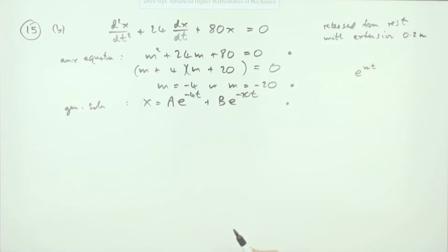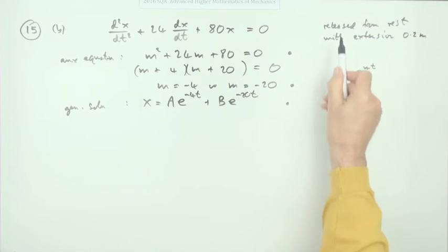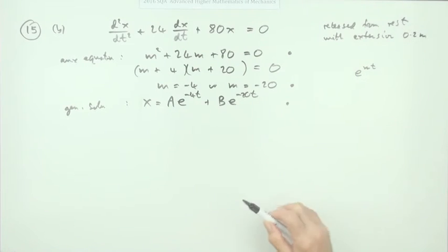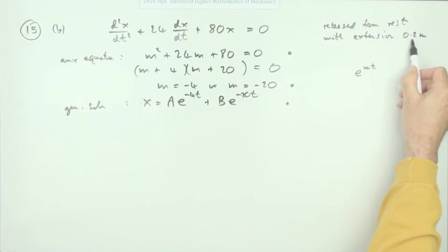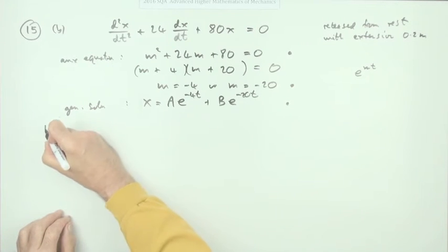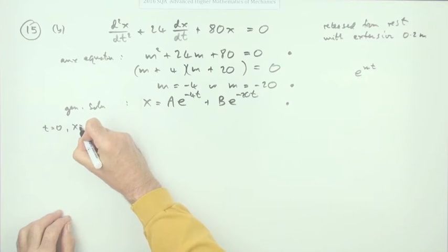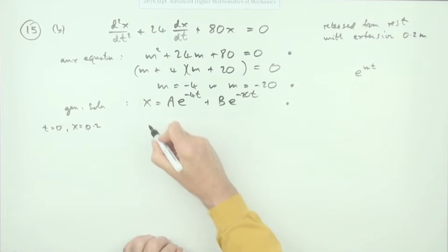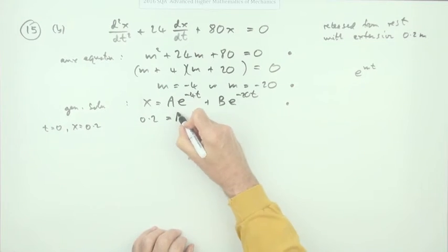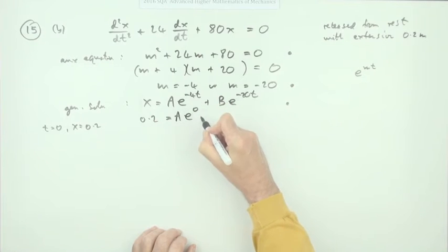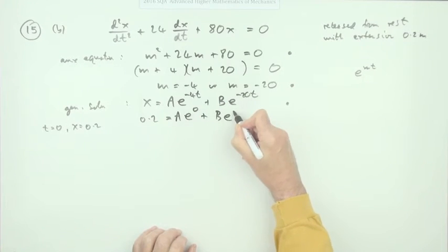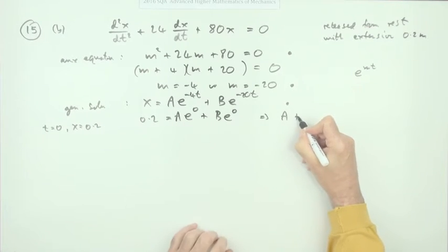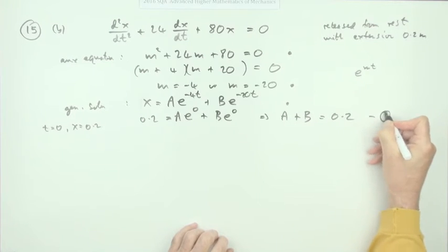Now apply the initial conditions — there are two. Released means t = 0; at rest means velocity is zero; extension means x = 0.2. Substituting t = 0 into the general solution: x(0) = A·e⁰ + B·e⁰ = A + B = 0.2. That's the first equation.